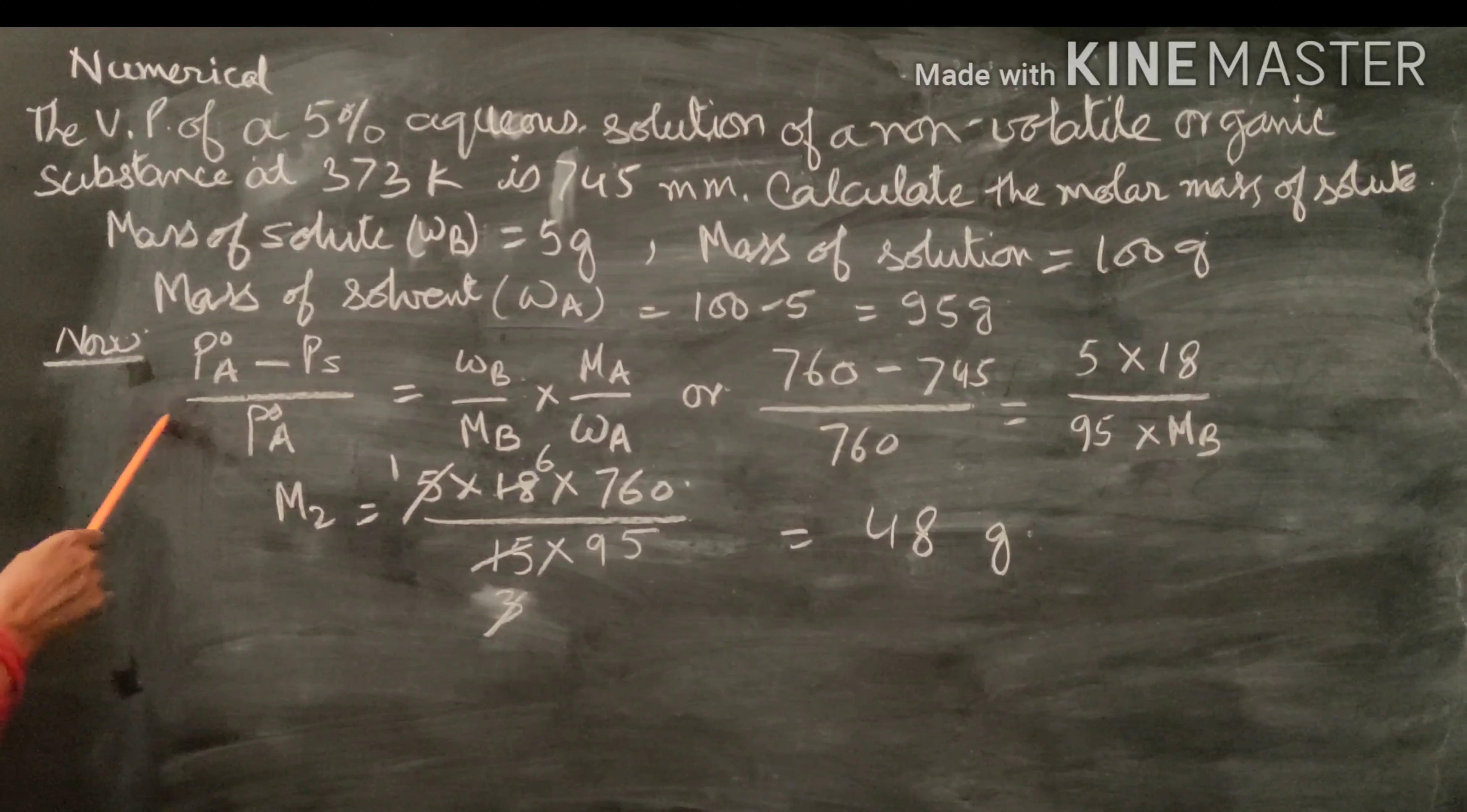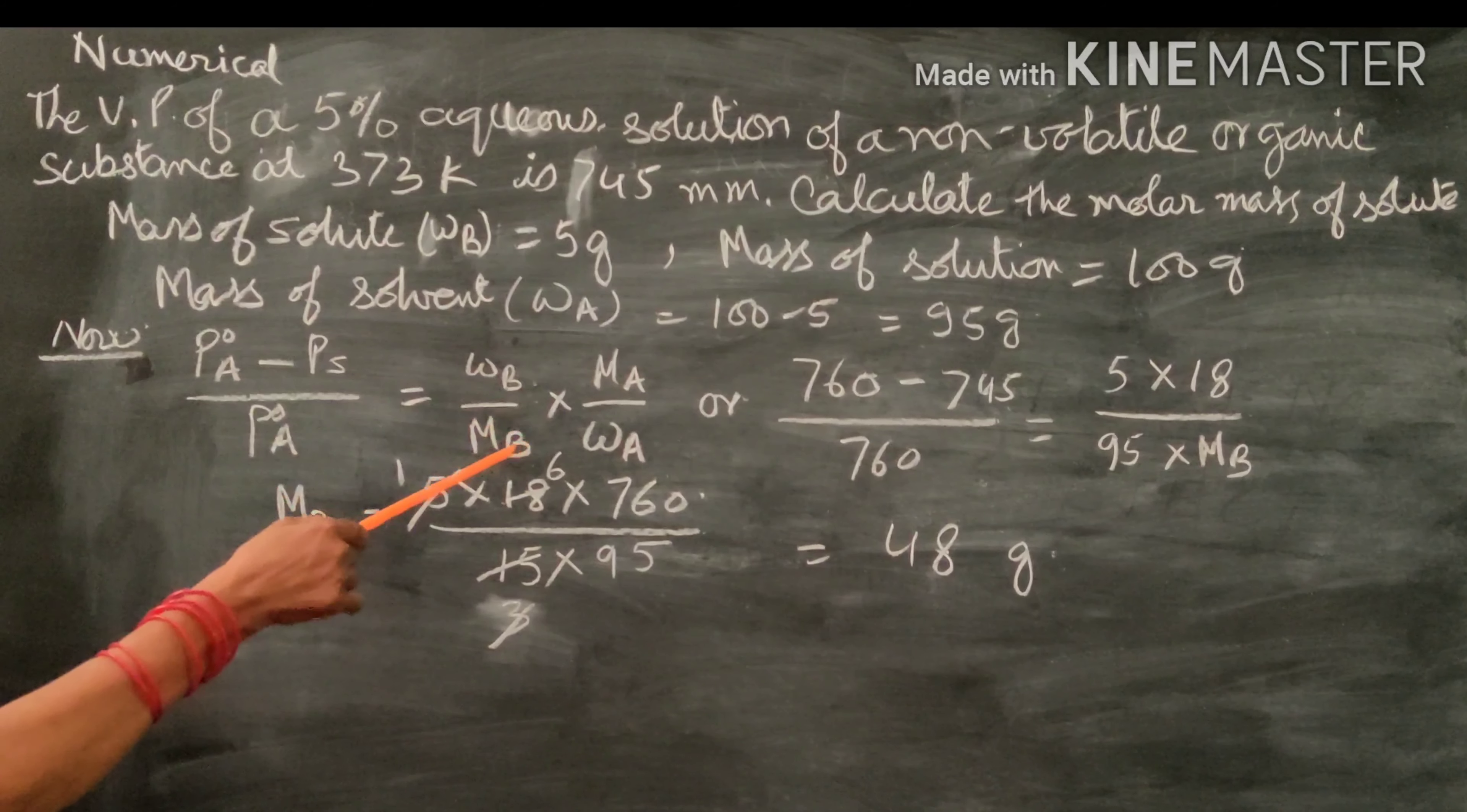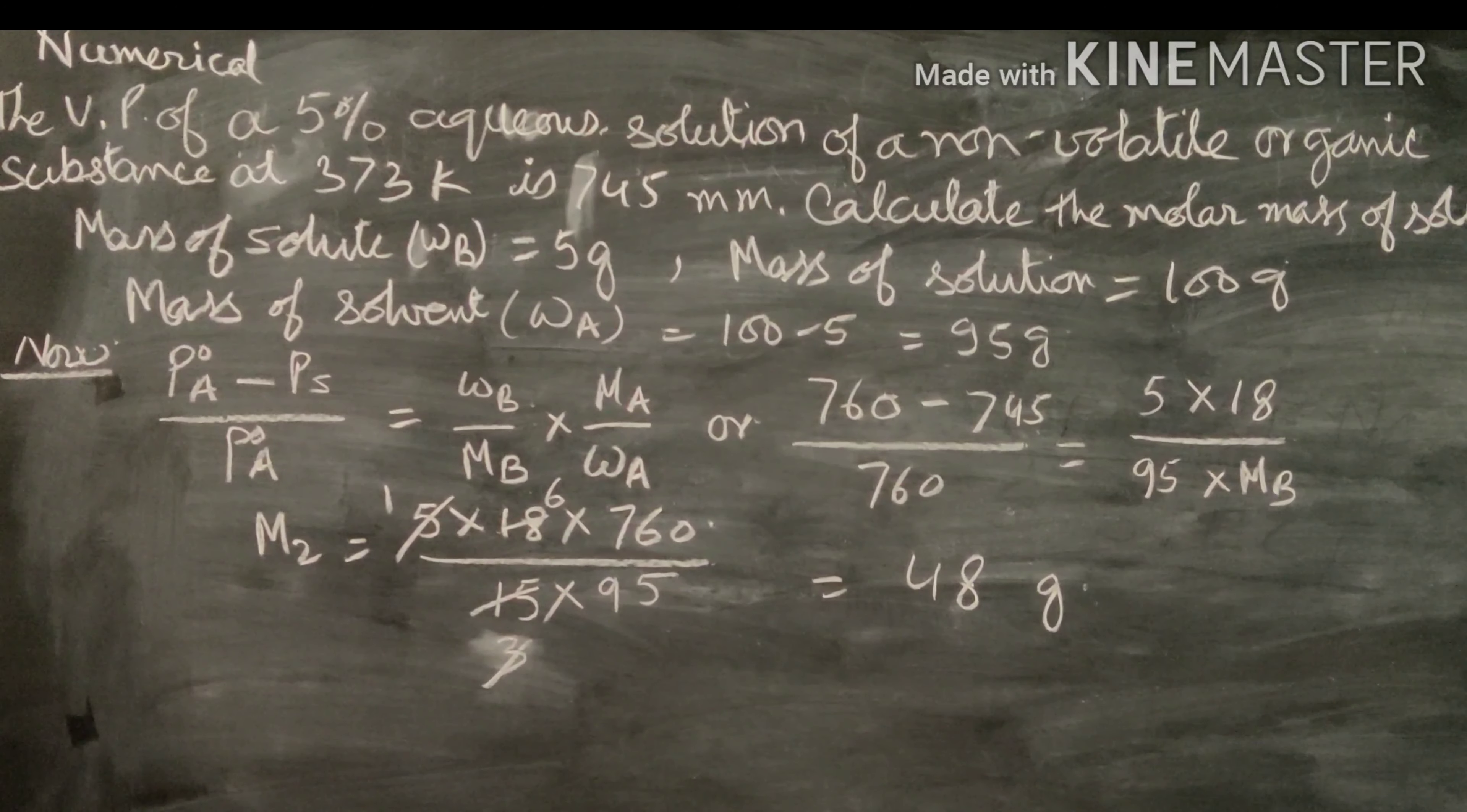Now, this is the formula: P0 minus P over P0 equals Wb over Mb times Ws over Ms. Here, Wb is the mass of solute, Mb is the molar mass of solute, Ws is the mass of solvent, and Ms is the molar mass of solvent.